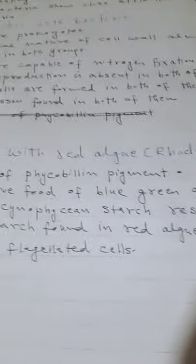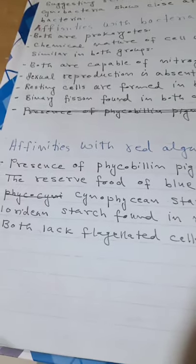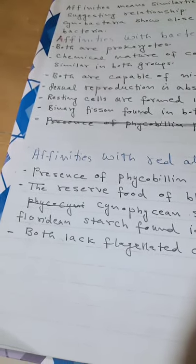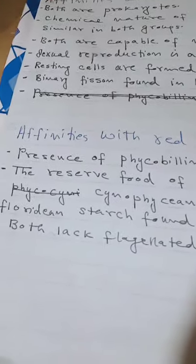Those were the similarities with bacteria. Now let's look at affinities with red algae, also called Rhodophyceae. In previous classifications, cyanobacteria were placed in the algae group, but later they were placed with bacteria. Cyanobacteria share similarities specifically with red algae — for example, the presence of phycobilin pigments, which are found in both cyanobacteria and red algae.